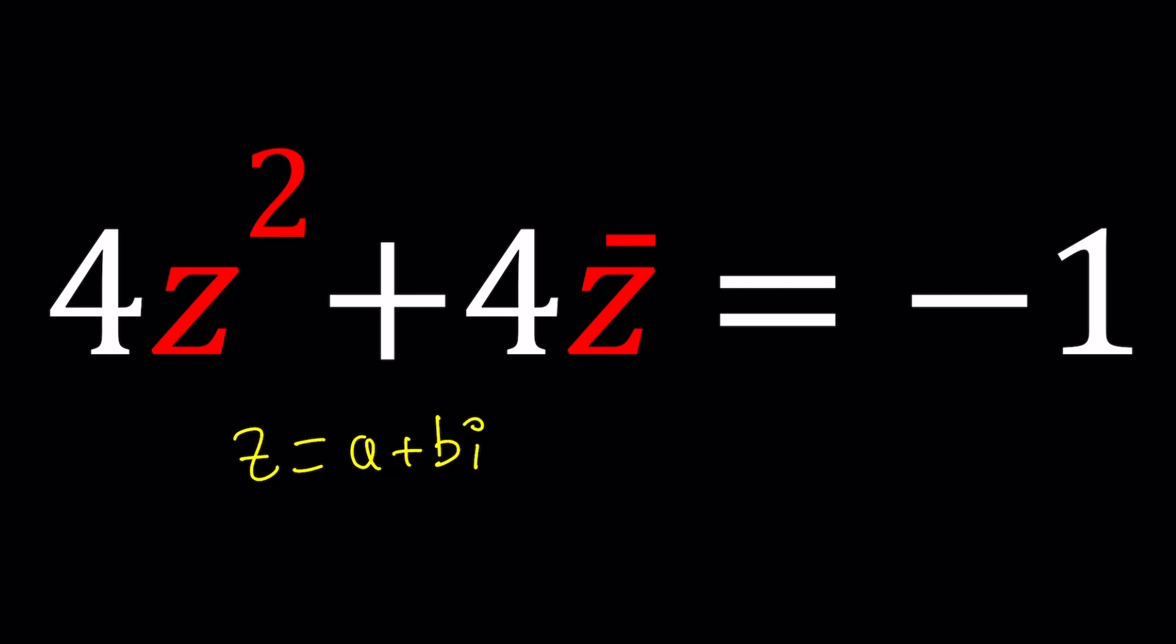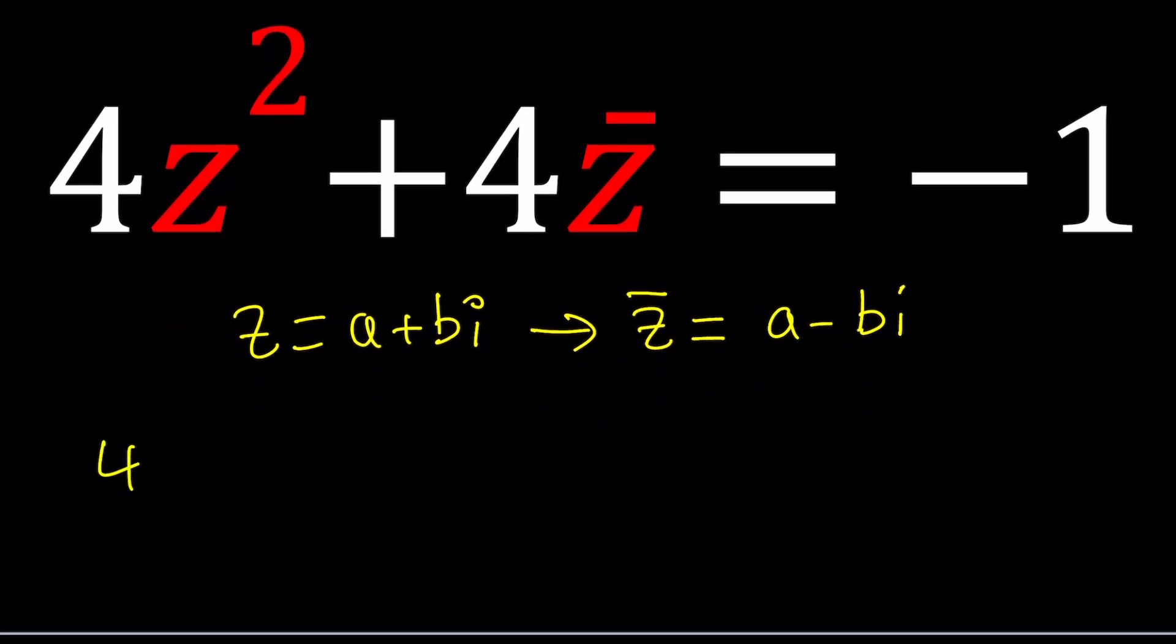Let's go ahead and replace z with that everywhere. But this is z̄, and the complex conjugate of z is going to be a - bi. Remember, to find the conjugate of a complex number, you change the imaginary part. You negate the imaginary part; the real part stays the same. Now let's see how this plays out. I'm going to plug it in, and that equals -1.